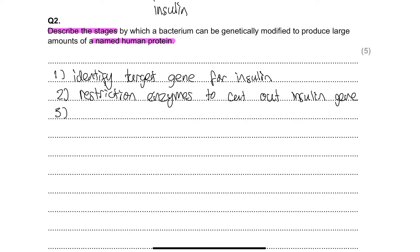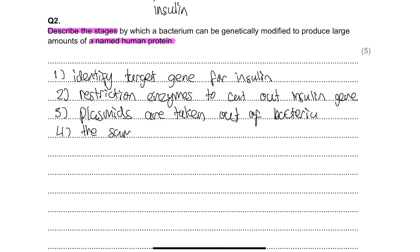After that, we use a bacterial organelle called a plasmid — a small loop of bacterial DNA. Plasmids are taken out of bacteria. We then need to cut a section of the plasmid so we can insert the insulin gene into it, and we do this using the same restriction enzyme. Using the same restriction enzyme ensures the ends are compatible so the insulin gene can be inserted into the plasmid properly.